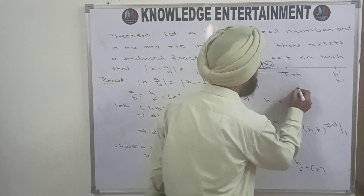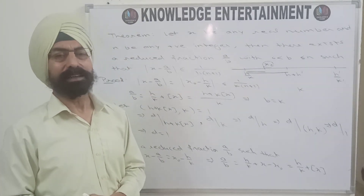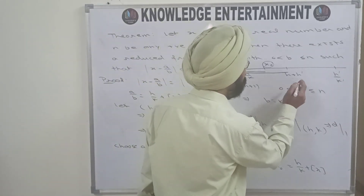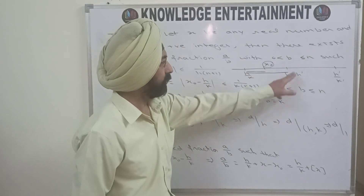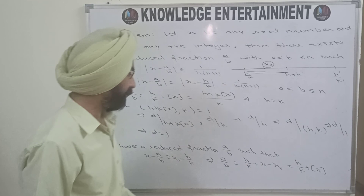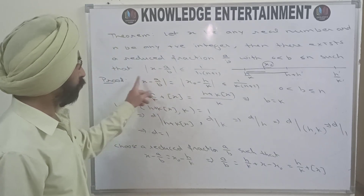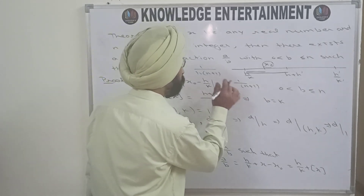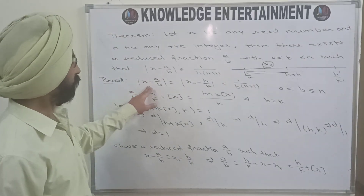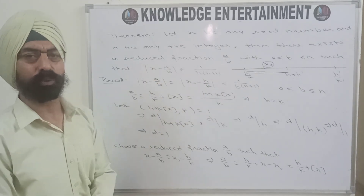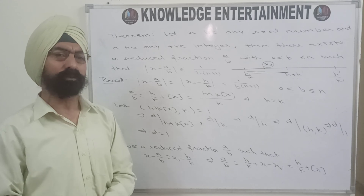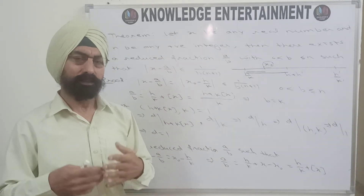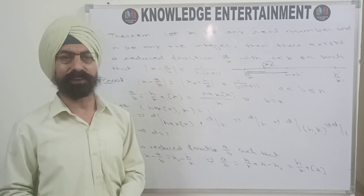Since b = k and k is the denominator of a Farey fraction of order n, we have 0 < b ≤ n, as required. Substituting b = k into |x − a/b| ≤ 1/(k(n+1)) gives |x − a/b| ≤ 1/(b(n+1)), which is exactly what was required to be proved. This is a very important theorem for examinations and research. We'll meet in the next video with more theorems and lemmas on Farey fractions.